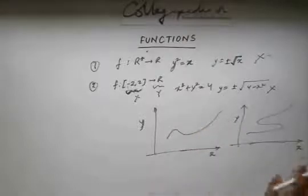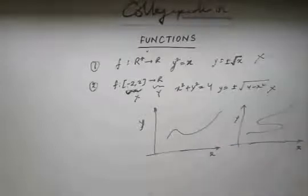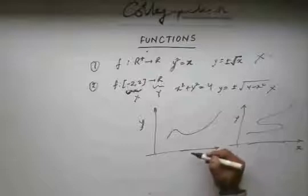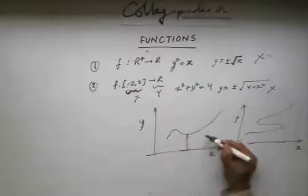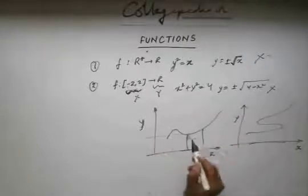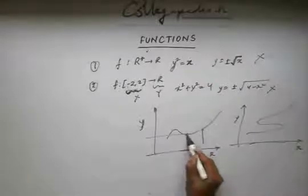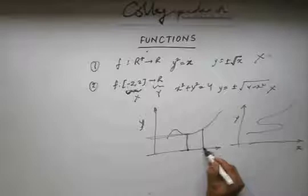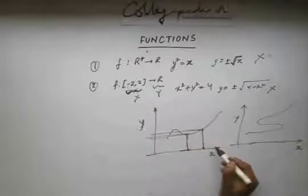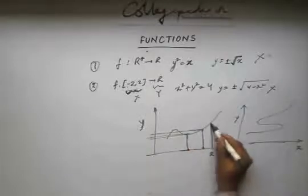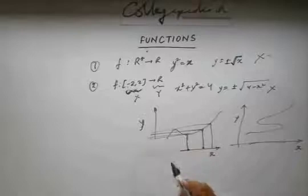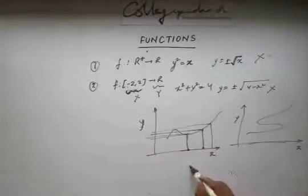Let's say I have drawn two graphs using some rule. The first graph is like this, the second graph is like this. Now I need to identify which of these two are functions. For a function, for each value of x, I should get a single value of y. In this case, you see for this value of x I have a single value of y, and for another value of x I again have a single value of y. So this is a function.